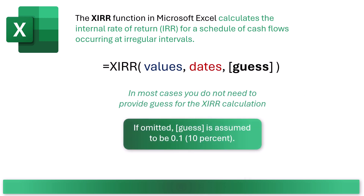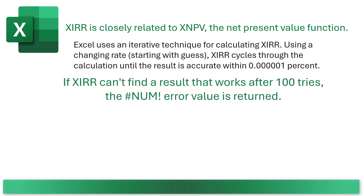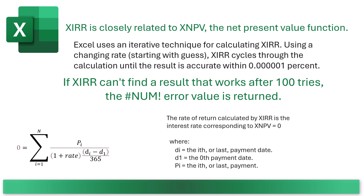The guess argument is a number you estimate is close to the result of XIRR. In most cases you don't need to provide one — if omitted, the guess is assumed to be 10%, or 0.1. The XIRR function is closely related to the XNPV (net present value) function. Excel uses an iterative technique, cycling through the calculation starting with the guess until the result is accurate within 0.0000001% — that's a millionth of a percent. If XIRR can't find a result after 100 tries, that's why you'll see a NUM error. The rate of return calculated by XIRR is the interest rate corresponding to XNPV equals 0.